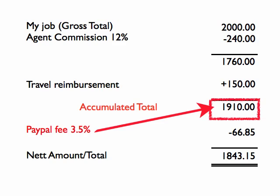So the new total after commission and travel is called the accumulated total. PayPal works out its fee based on this amount, so we can do the same in our JobTracker app to get a more accurate net total.